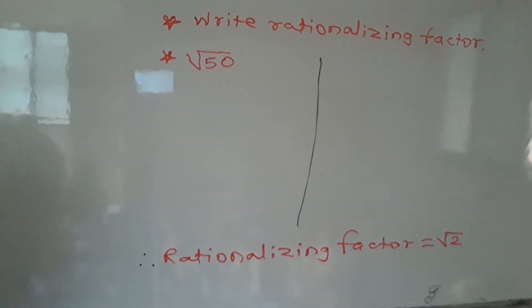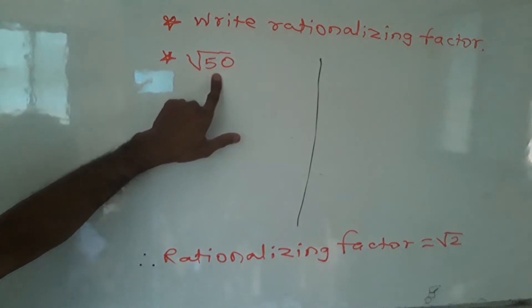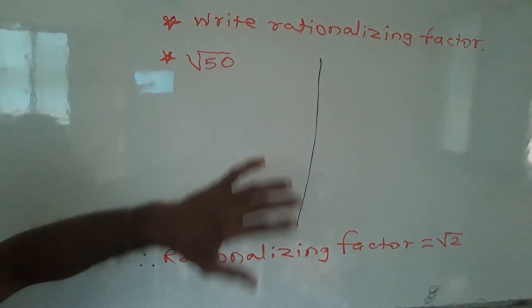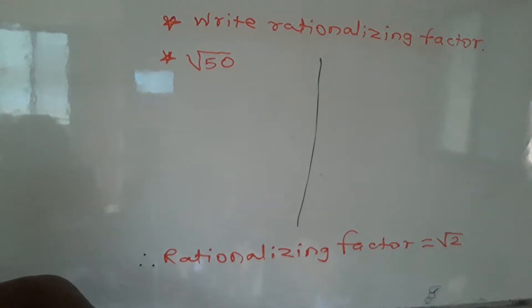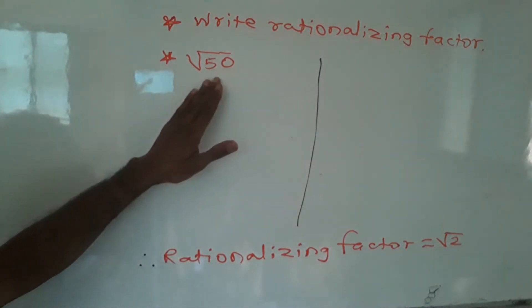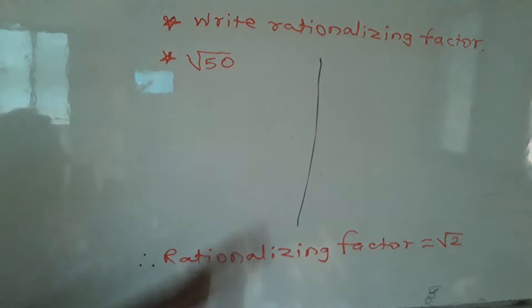Now this is another example, that is square root of 50. Now square root of 50 is not a perfect square. Then we reduce this square root of 50 into perfect square.